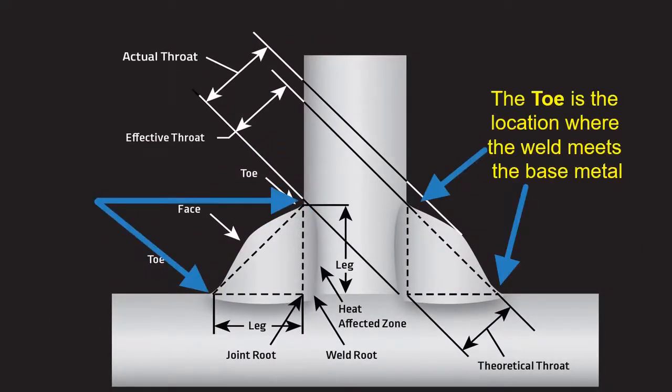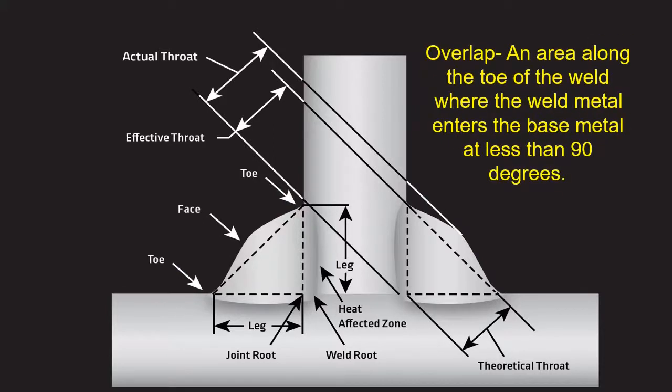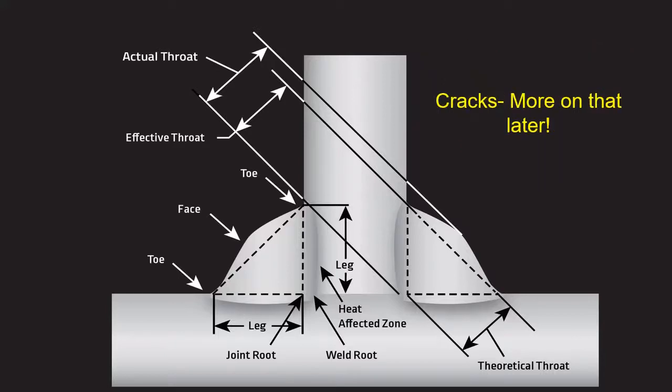While you're welding in the shop, some of the discontinuities that you might see along the toe of the weld are going to be undercut, a groove in the base metal along the toe of the weld, overlap, an area where the weld metal blends in at less than 90 degrees. Sometimes cracks, but probably not for what we're going to be doing in the shop.